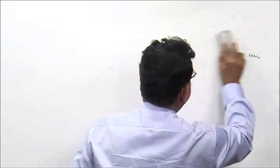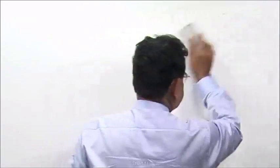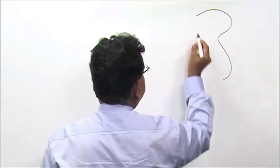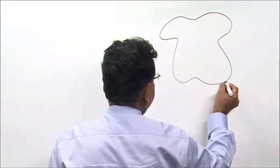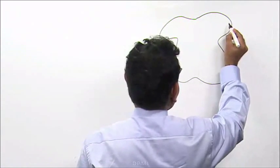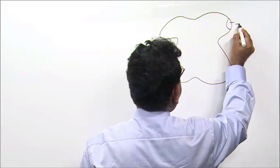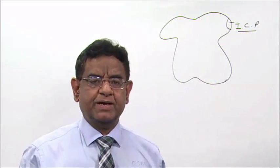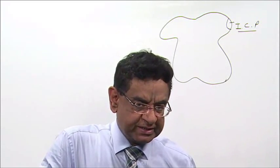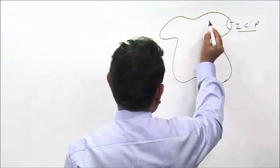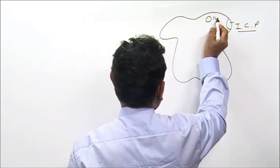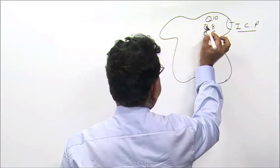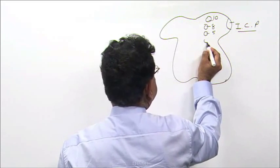Now we come to the medulla oblongata. Let us learn the basic anatomy. This is the inferior cerebellar peduncle — the cerebellum is attached to the medulla via the inferior cerebellar peduncle. Here is the tenth nerve nucleus, eighth nerve nucleus, and fifth nerve nucleus.